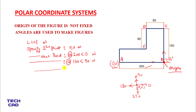Now again it will ask you to specify the next point. Again add the at-sign — when you put it, C point becomes your origin now. For D point, the length of the line is 80 as per this figure, and the angle — you can see this — is 180.